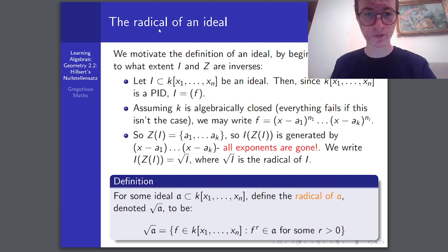So, firstly, we need to define the radical of an ideal. We begin to study to what extent i and z are inverses. If i is an ideal, then since this polynomial ring is a principal ideal domain, i, the ideal here, is generated by one function f. And so, assuming k is algebraically closed, which will be an assumption for the whole of this video and most of the series, in fact, because everything pretty much fails if this is not the case,